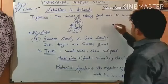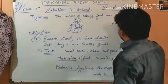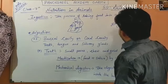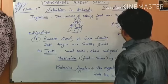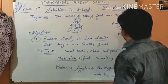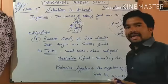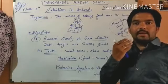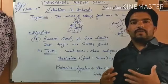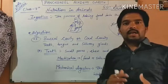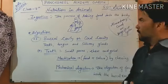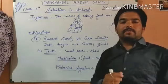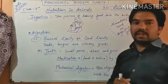The alimentary canal, also called the digestive system, starts from the mouth — buccal cavity — then the esophagus, stomach, liver, pancreas, small intestine, large intestine, and anus. When we take food inside our mouth through the alimentary canal, this process is ingestion.